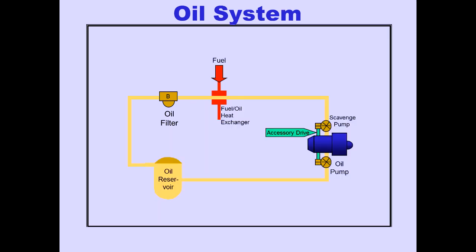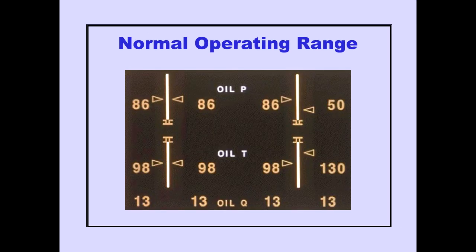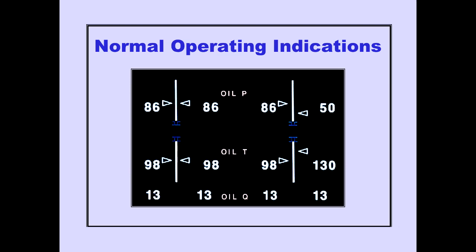This completes the discussion on the engine oil system. We will next look at oil system indications. Oil system indications are displayed on ICAS as part of secondary engine indications. Normal operating ranges are displayed in white. Normal oil pressure and oil temperature are displayed by white digital and vertical indicators. The digital indicators show numerical value, while the vertical indicators move to show relative value. Oil quantity is displayed only by digital indicators.